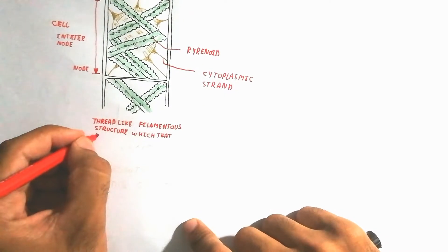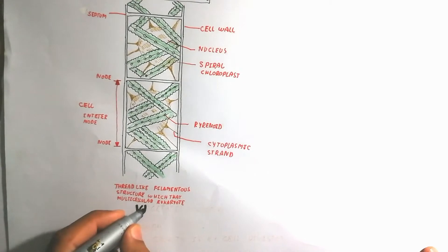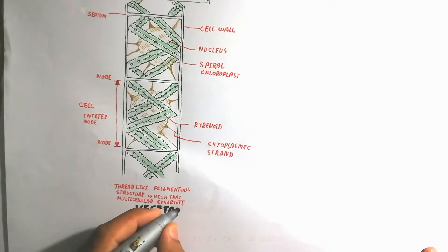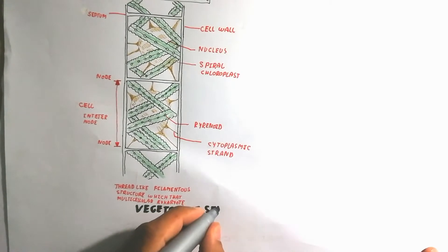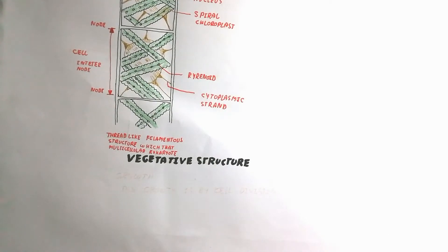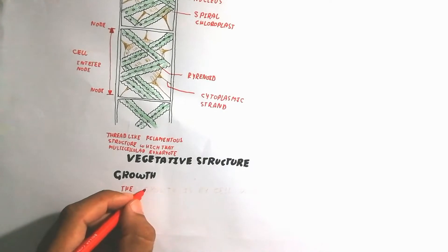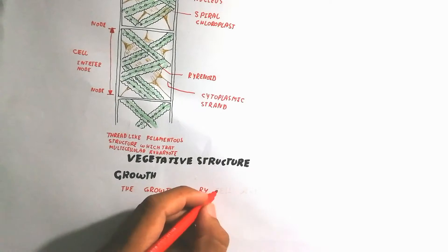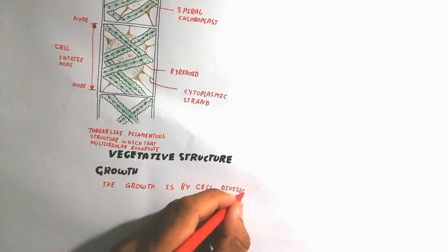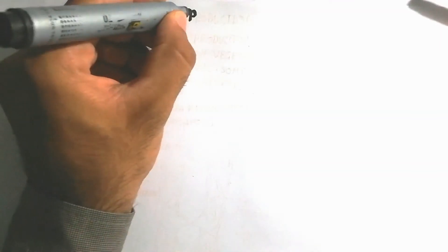Each cell contains a single nucleus, which is why it is known as a eukaryotic cell — eukaryotic because a true nucleus is present, unlike prokaryotes which lack a true nucleus. The filamentous structure is a multi-nucleate eukaryote that is freely floating. Vegetative reproduction occurs by fragmentation — a long filament breaks into short segments, and those short segments grow again by cell division.